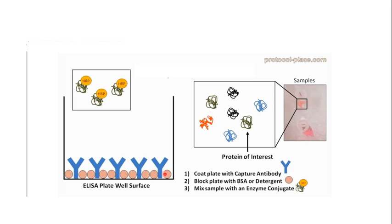In the third step, you take your protein of interest — produced recombinantly — and attach an enzyme to it. Here, HRP (horseradish peroxidase) is used as the enzyme. When the target protein is attached to an enzyme it is called an enzyme conjugate, because the protein has been conjugated with the enzyme. So in step three you prepare this enzyme conjugate.